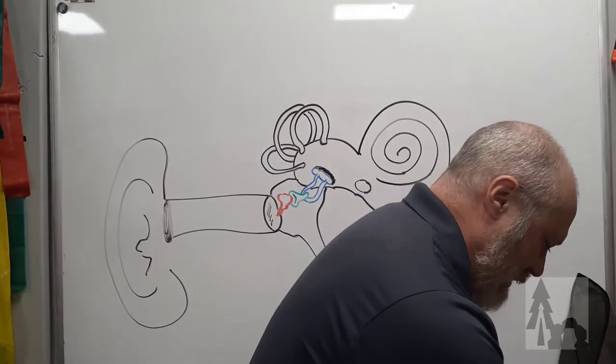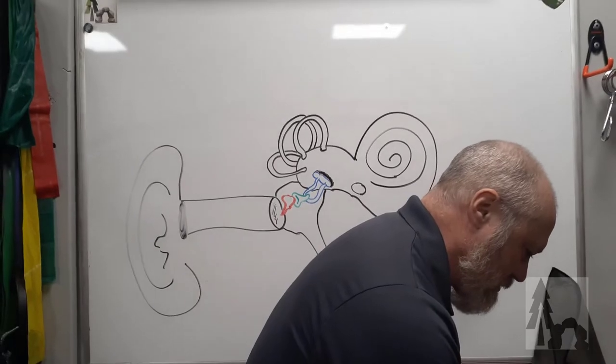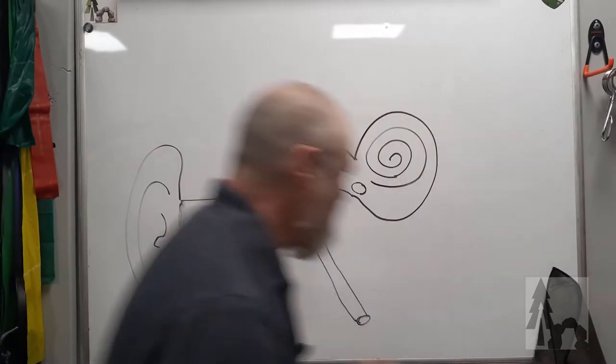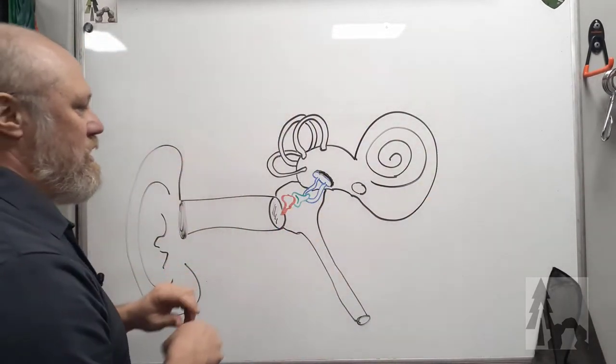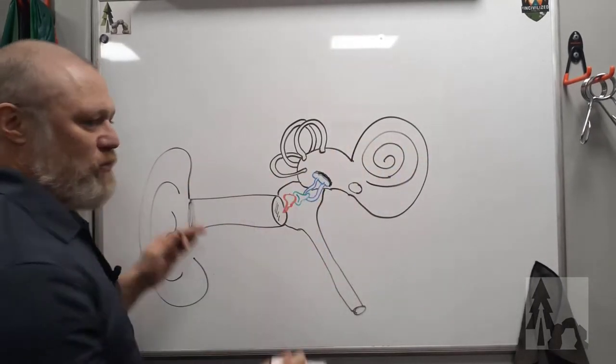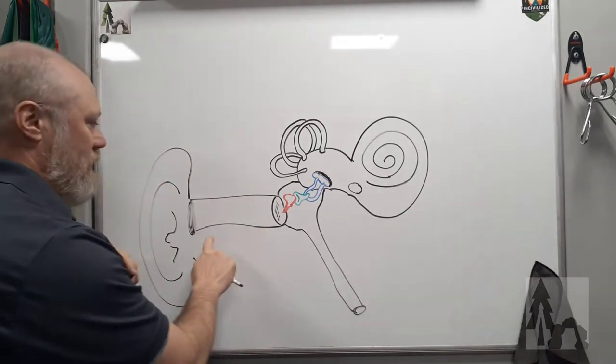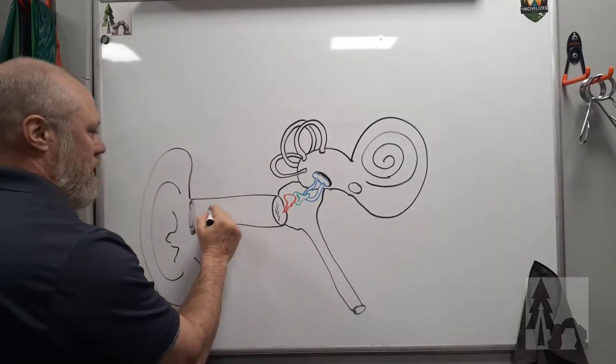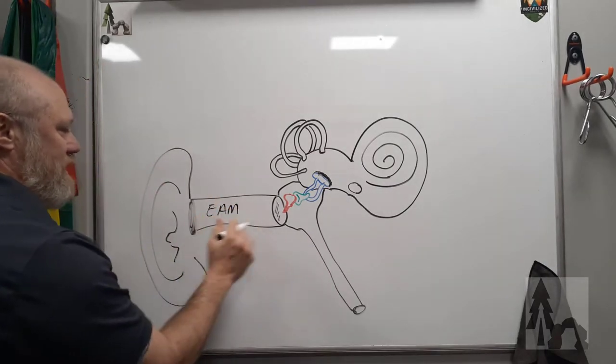So set the skull down for a moment. I'll drop it. And then I drew this out. So you can think of this as running through that petrous ridge on the temporal bone. You're going to have the external auditory meatus, right, that's the ear hole.